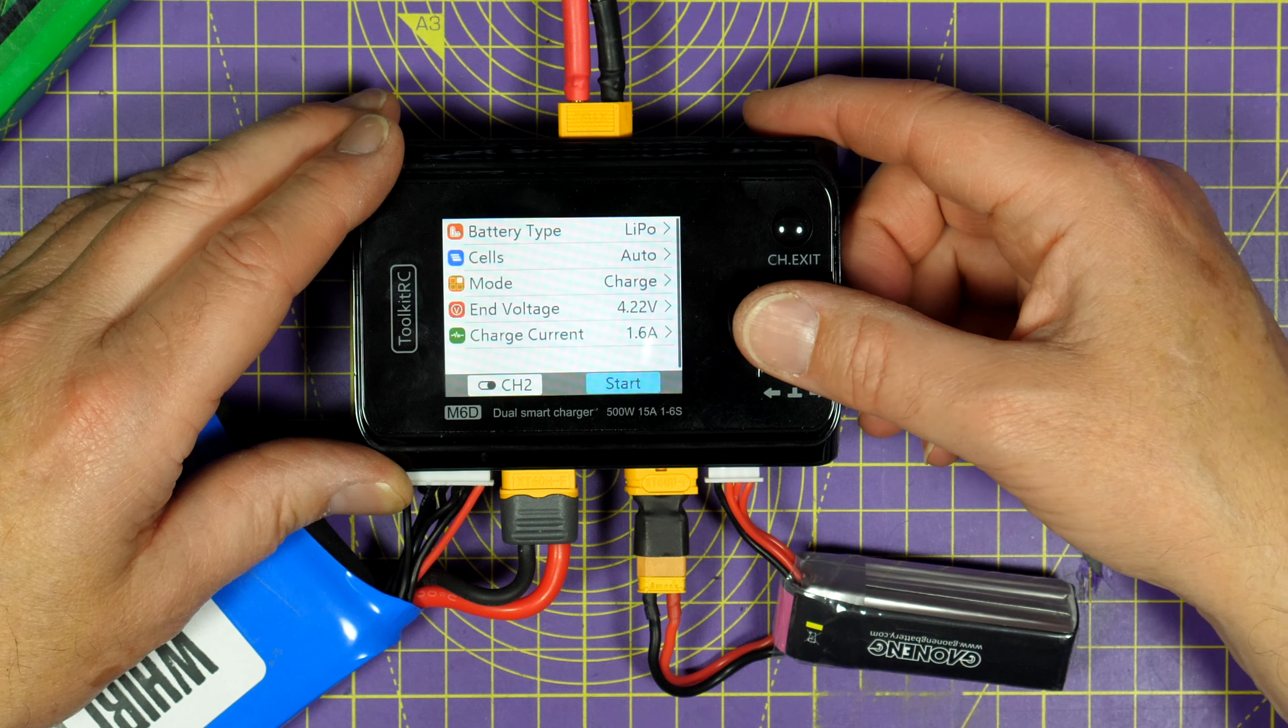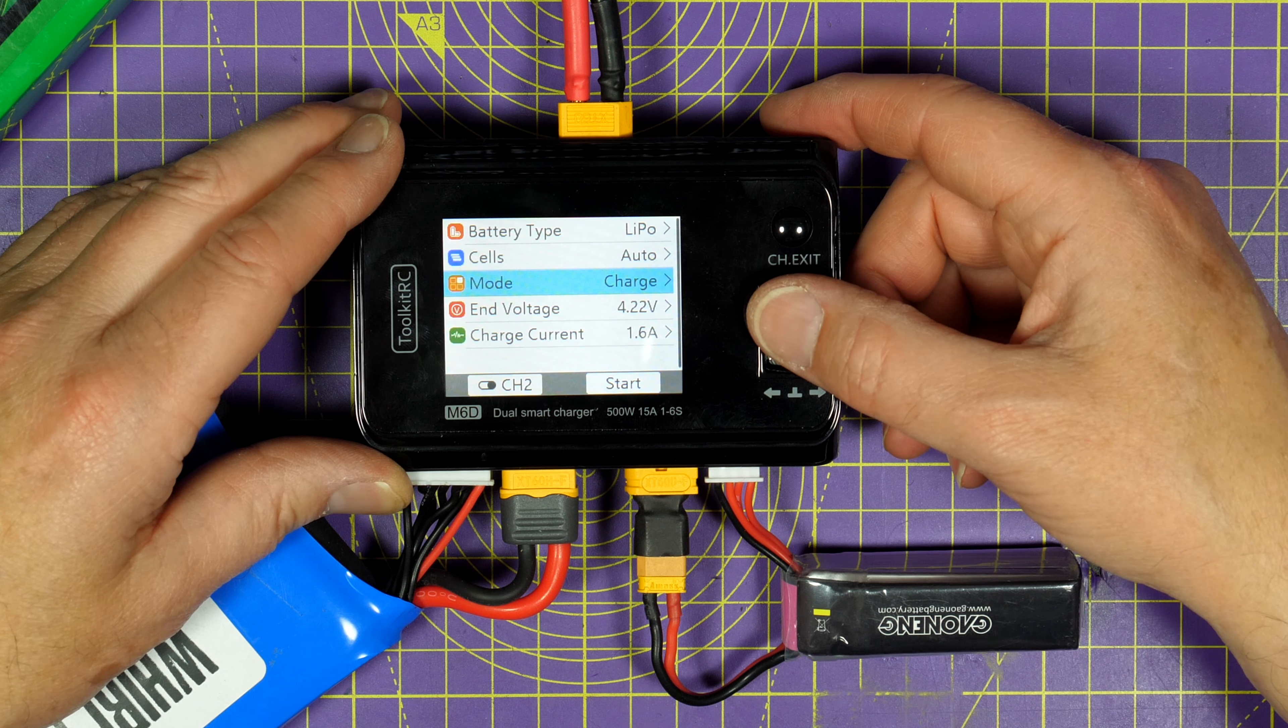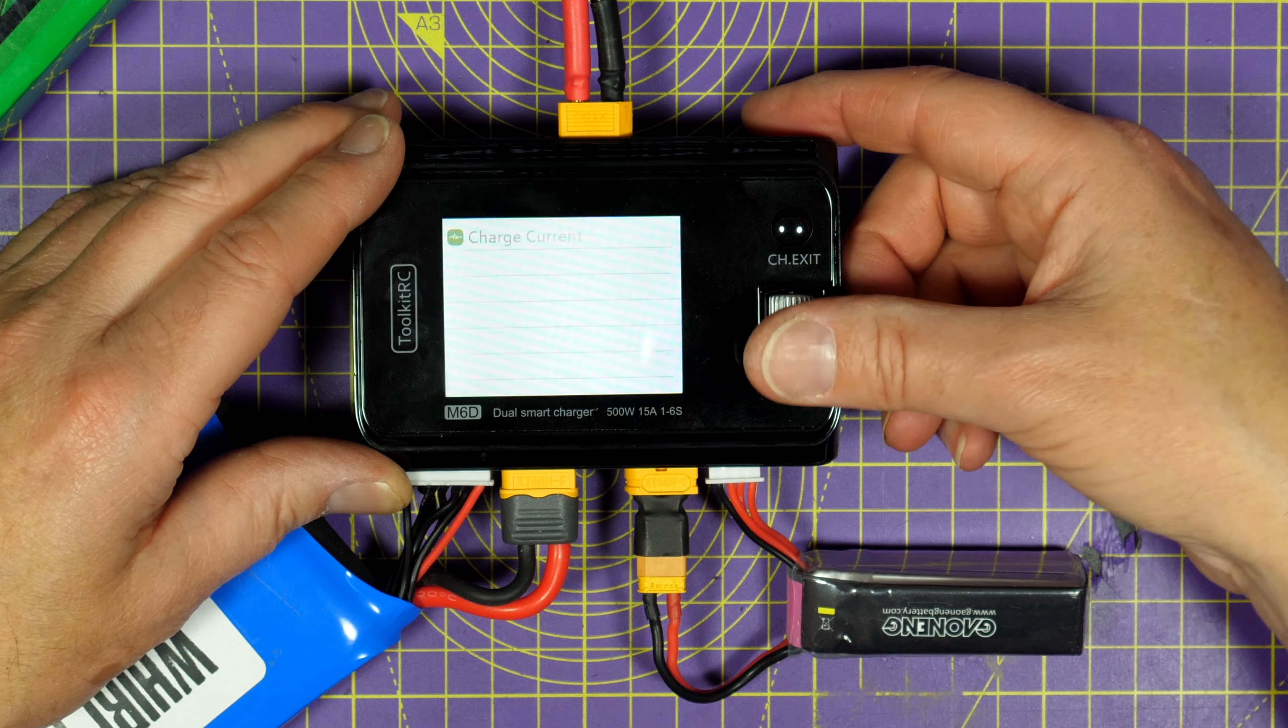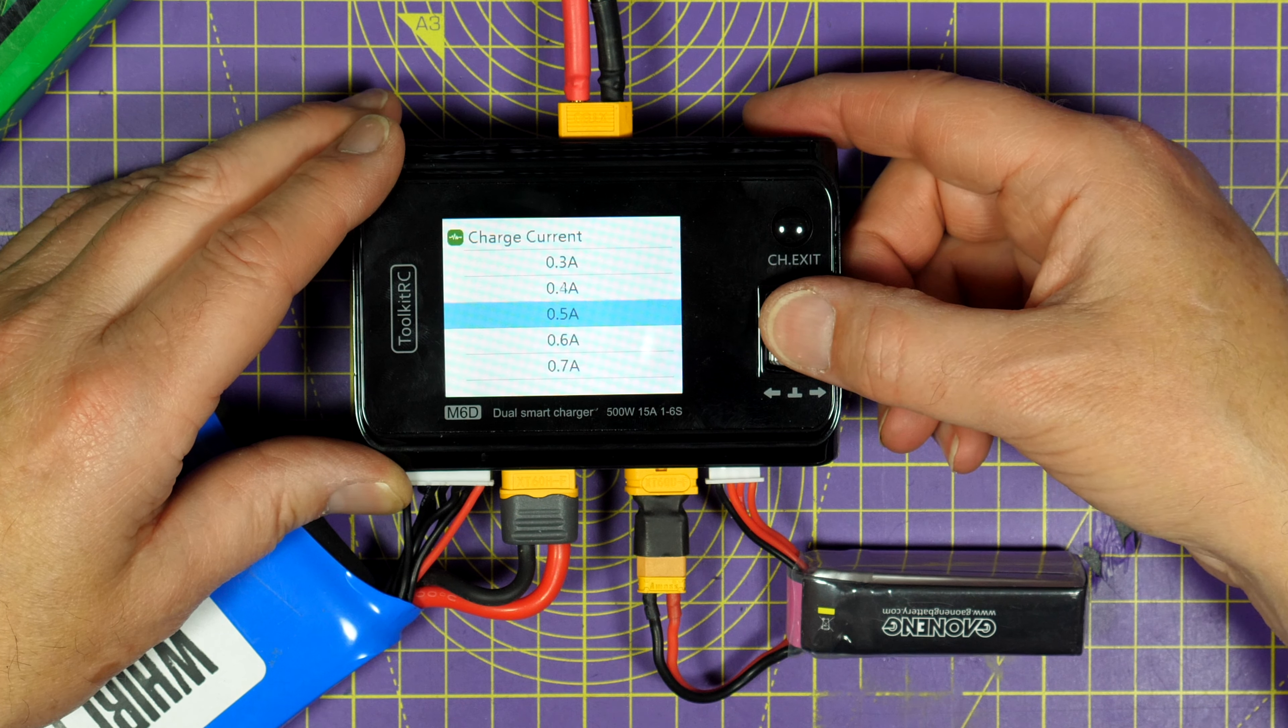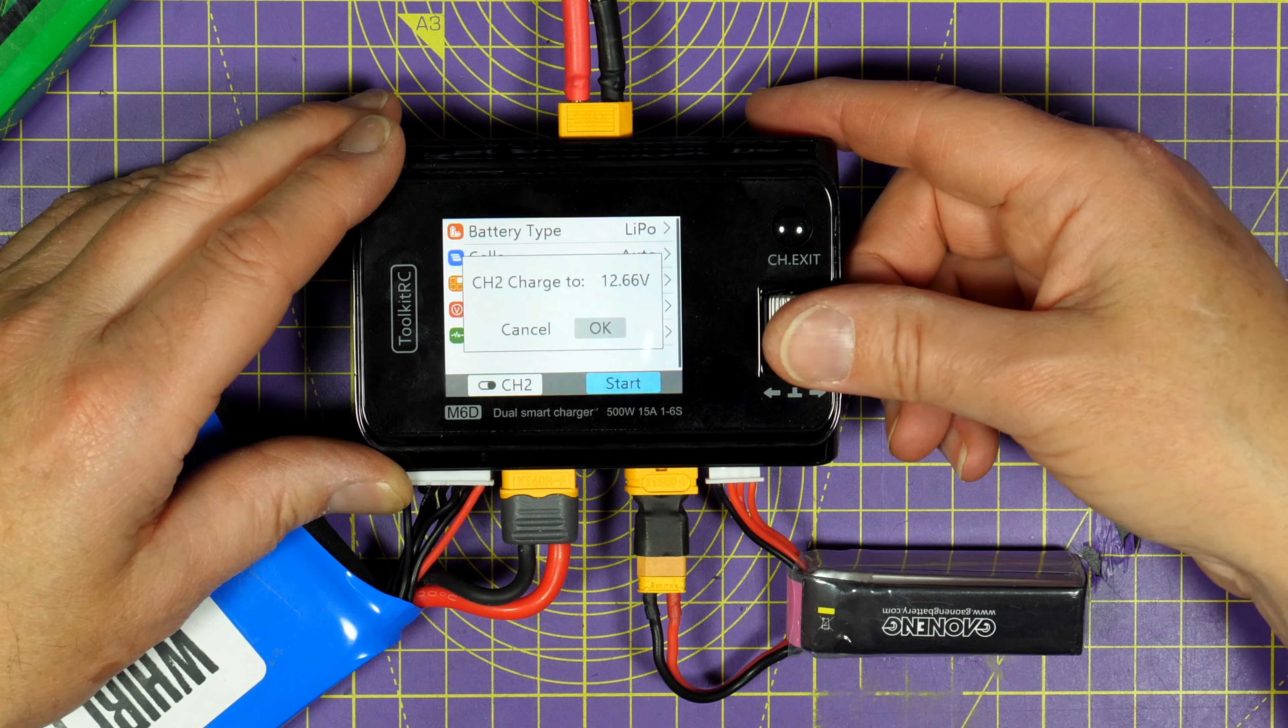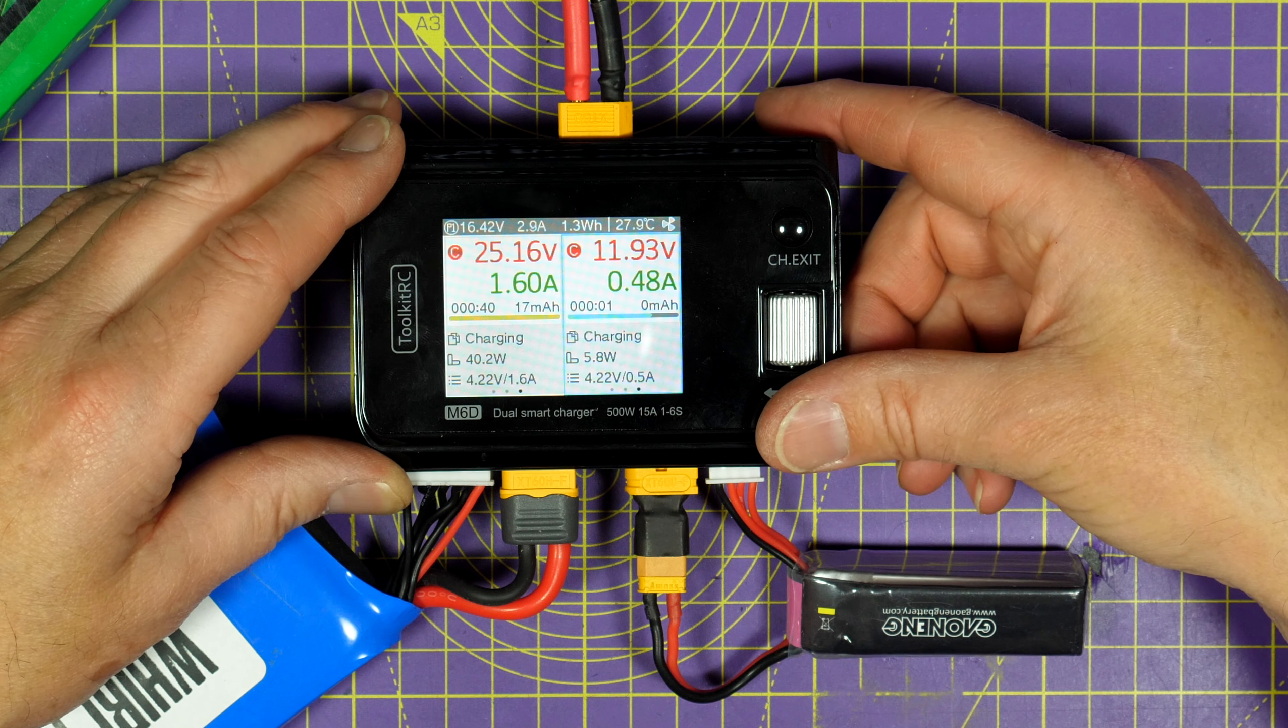So on here we have got a LiPo, we'll select auto, charge and we'll charge, what is this? This is 450 mAh so let's charge that at maybe half an amp. That's about right, we're on channel 2, hit start, going to charge to around 12 volts.